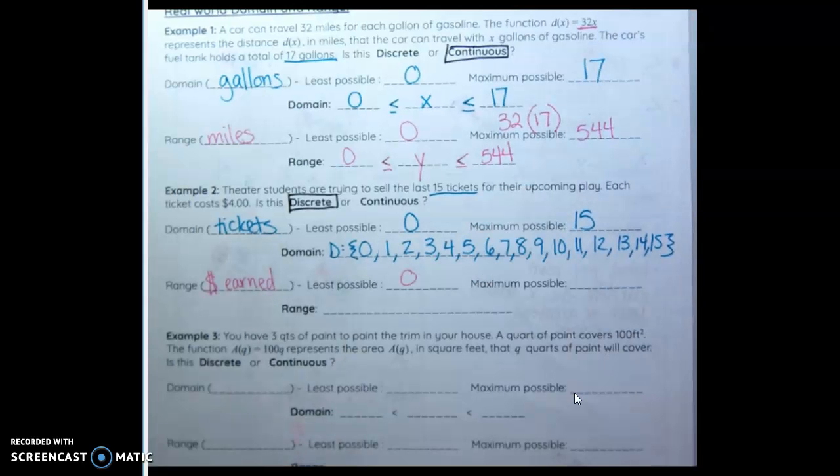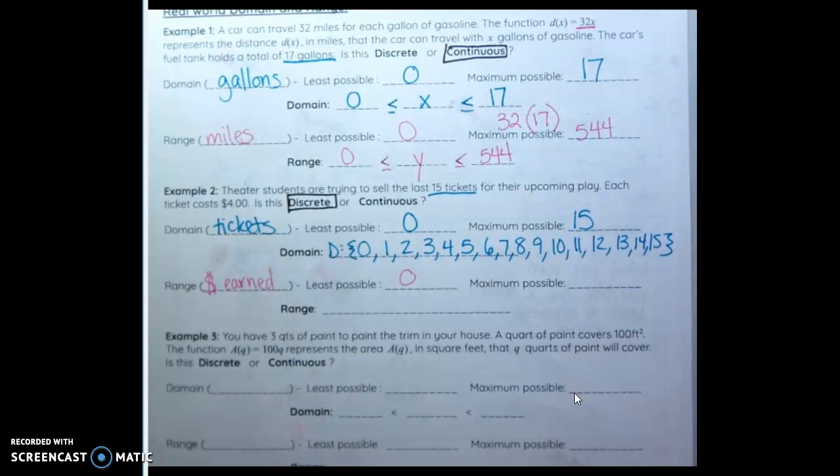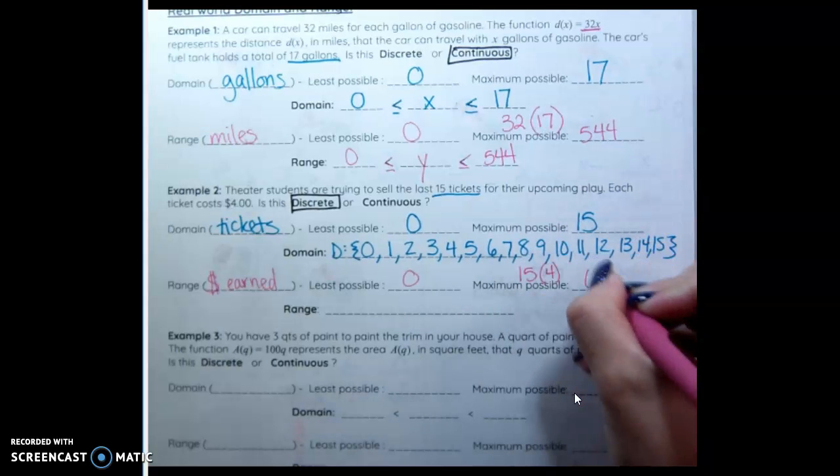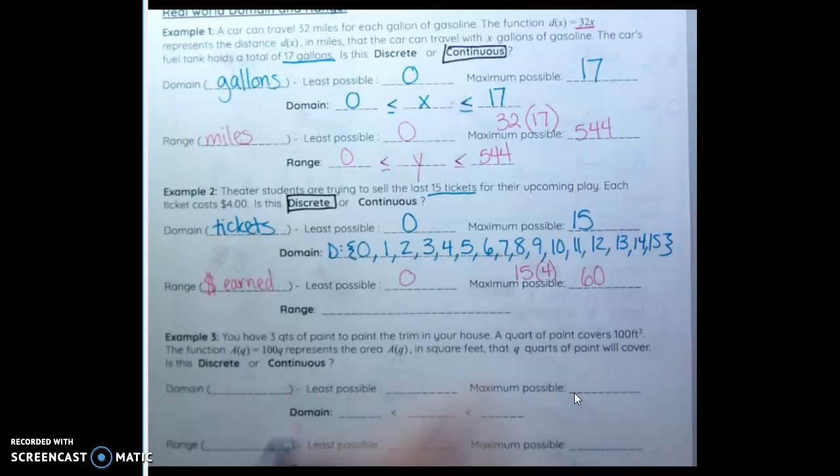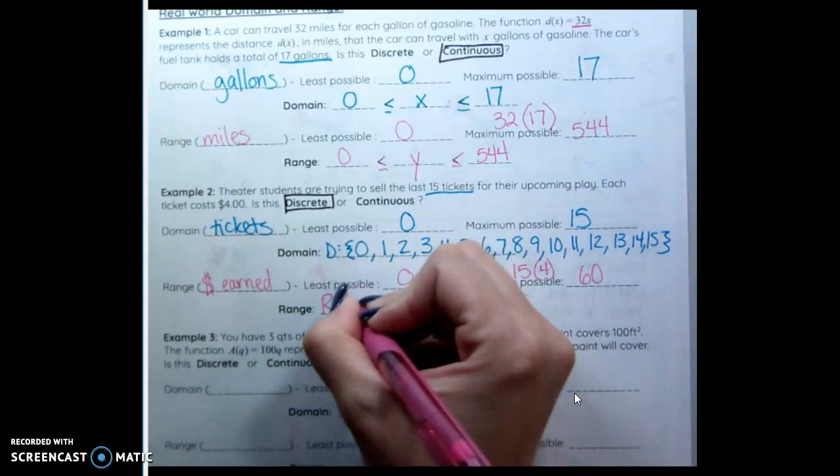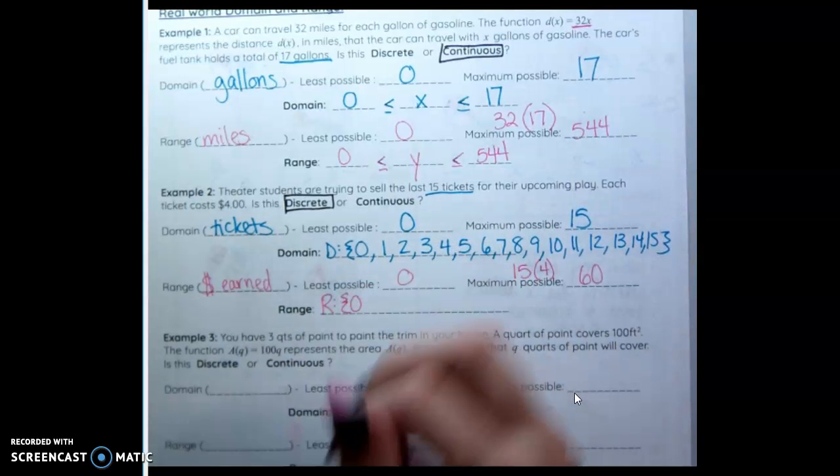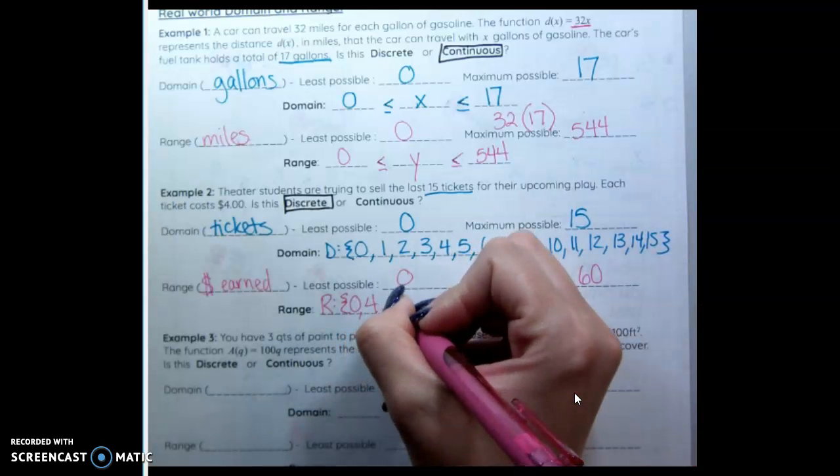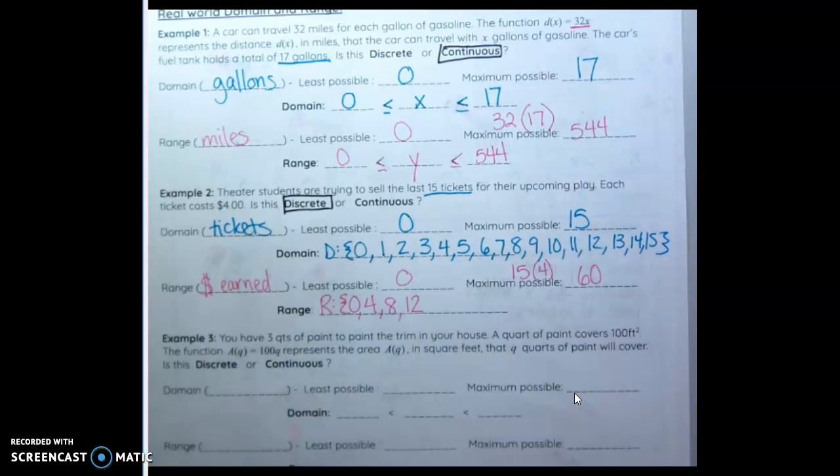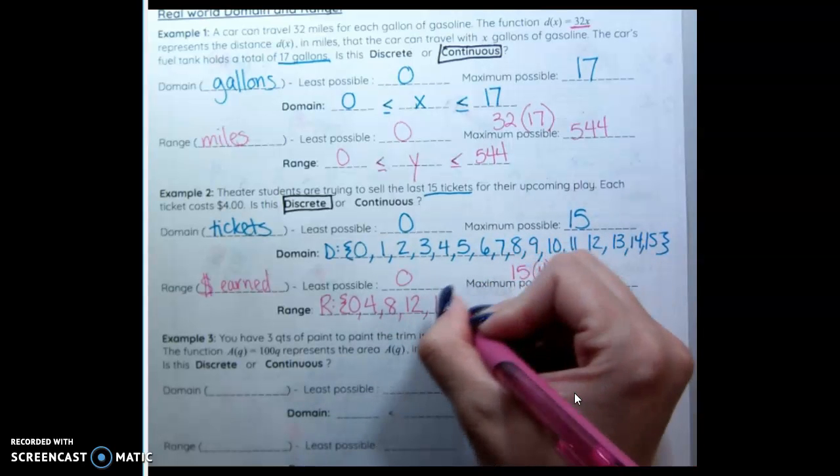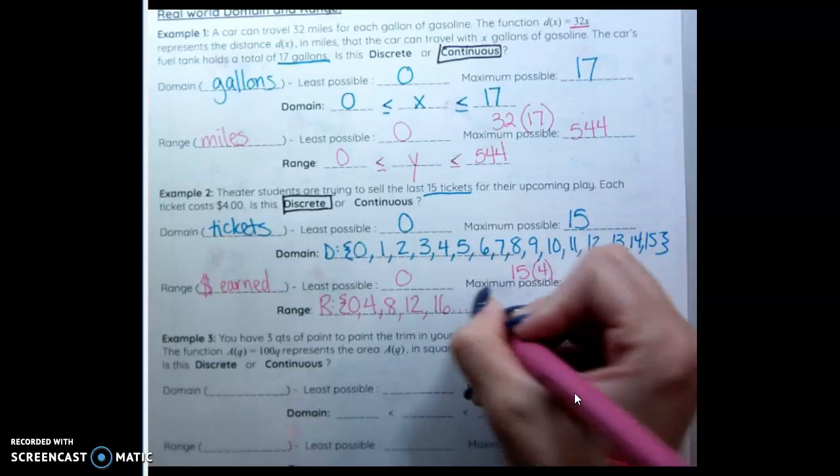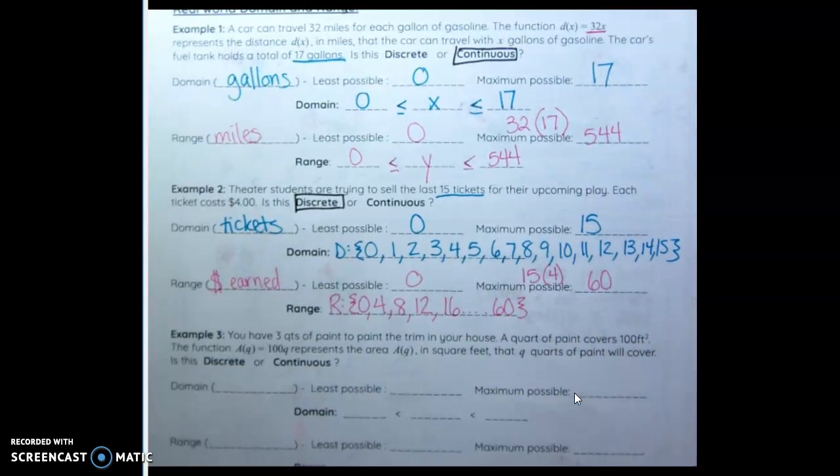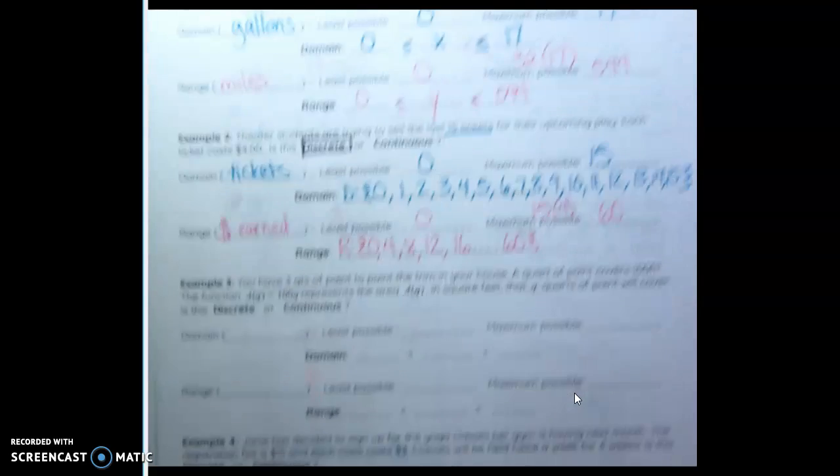Money earned. If I sell zero tickets, I make zero dollars. If I sell all 15 tickets, they're each $4. That means I can make $60. You write the range the same way. If I sell zero tickets, I make $0. If I sell one ticket, I make $4. If I sell two, I make $8. So each time it's going up by four. What's that called? A sequence, you mean? I'm going to put dots. It stops at 60. Your teacher might have you list all of them for a test.